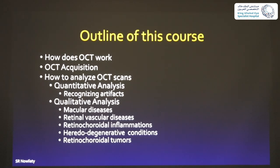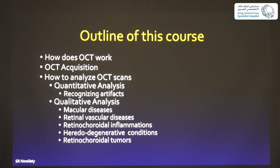Let me give you an outline of how we're going to conduct this. First, I'll give you a brief explanation of how OCT works, then how to acquire an OCT, what the minimum necessary is to get a good OCT, and then how to analyze it — both quantitatively and qualitatively. I'll also cover how to identify artifacts so you don't analyze incorrectly. Then we'll go through qualitative analysis by looking at macular diseases, retinal vascular diseases, choroidal inflammation, degenerative diseases, and some tumors. I'll also include clinical pictures and fluorescein angiography so you can tie things together.